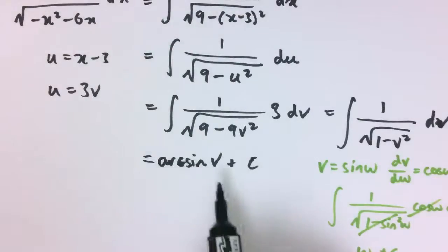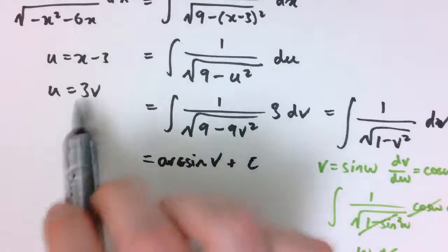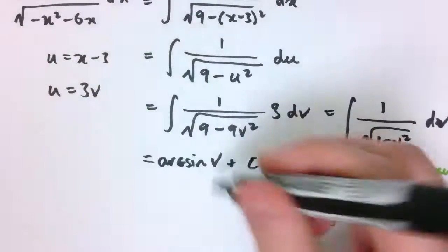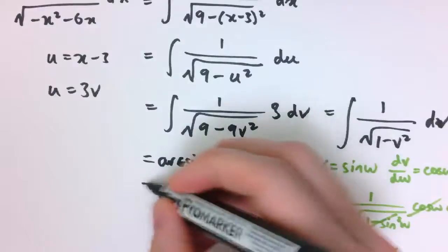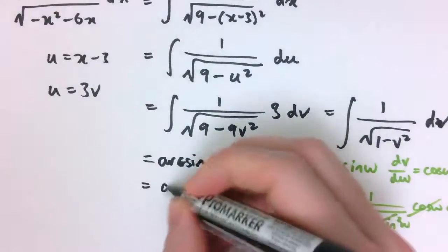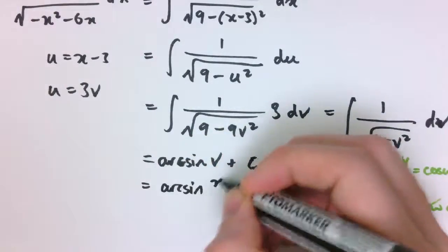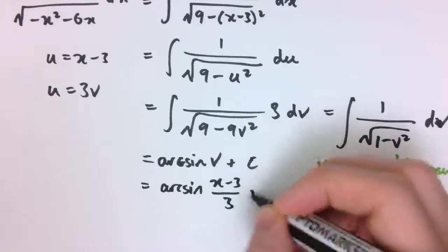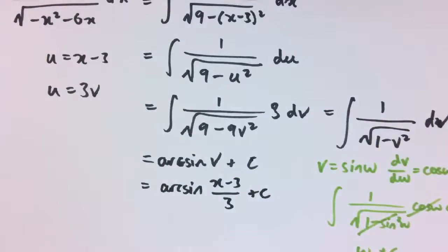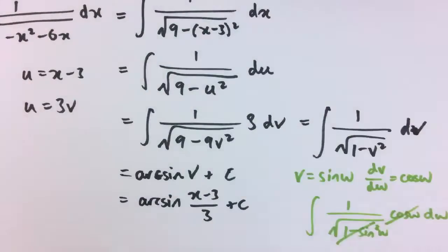So this integral is arcsin of v plus c. I just need to unpick this integral. Then we've got v equals u over 3 and u equals x minus 3, so this is arcsin of (x minus 3) over 3 plus c. This might look a little bit complicated. We've had to do loads of substitutions to get to the answer here.